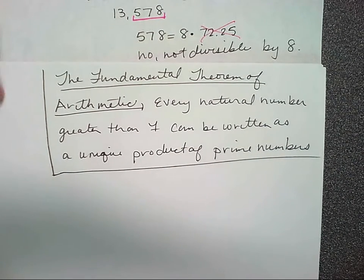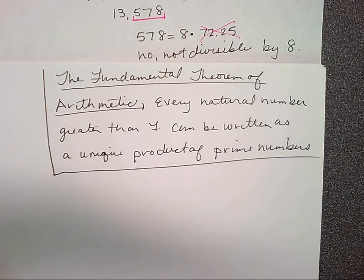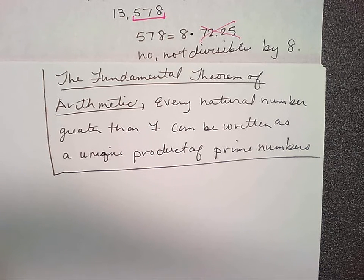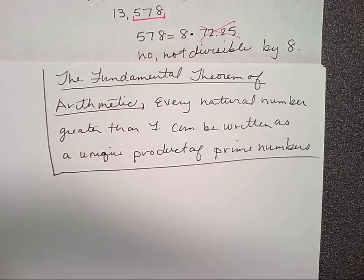What do we mean by unique? So six can be written as two times three — that's unique because three times two is not different from two times three. You're writing six in only one way.